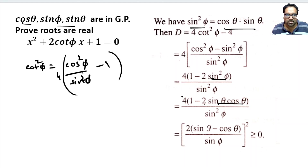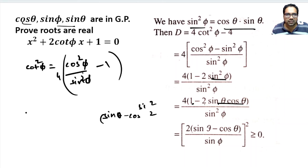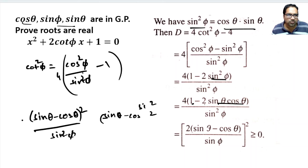That means the numerator becomes 1 - 2sin θ cos θ. We can write 1 as sin²θ + cos²θ, so this becomes sin²θ + cos²θ - 2sin θ cos θ, which can be written as (sin θ - cos θ)², or equivalently (cos θ - sin θ)². So 4cot²φ - 4 equals 4 · (sin θ - cos θ)² / sin²φ, which is the same as [2(sin θ - cos θ) / sin φ]². This overall expression is a perfect square.